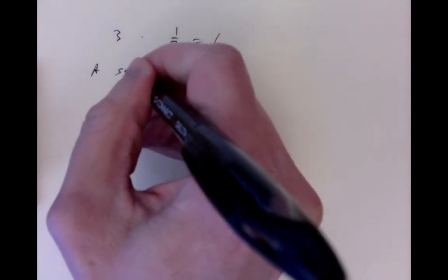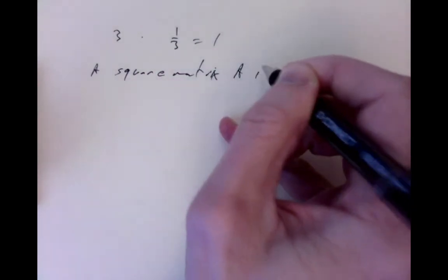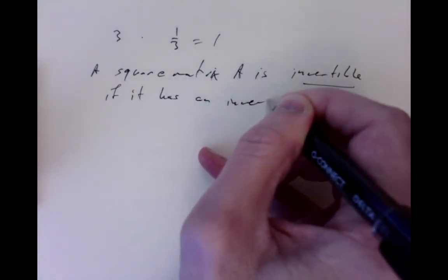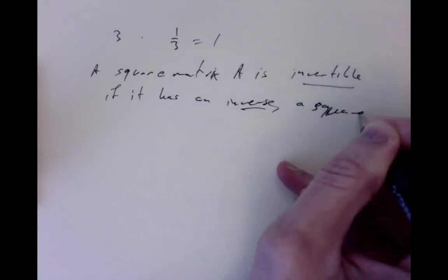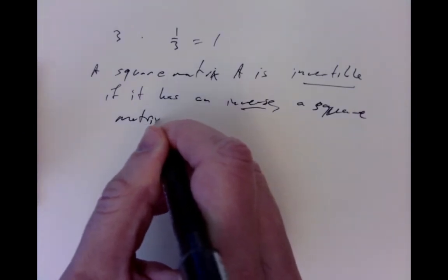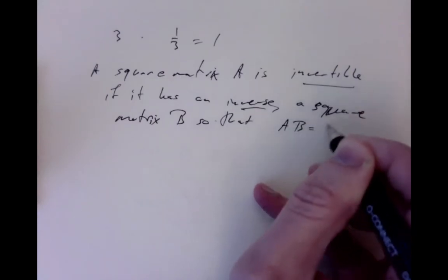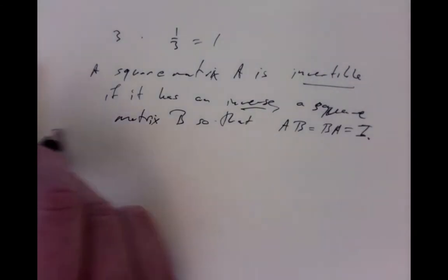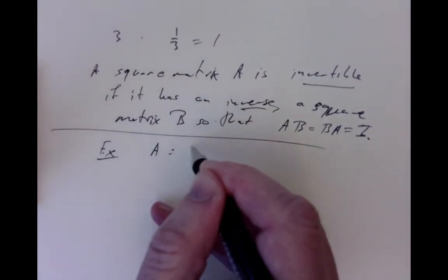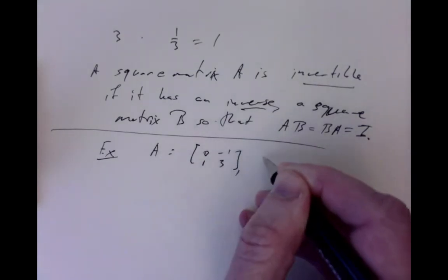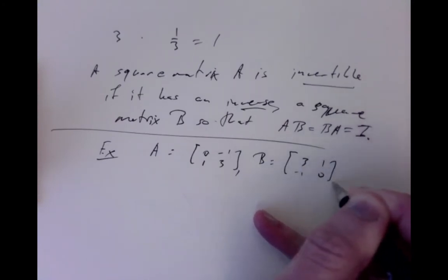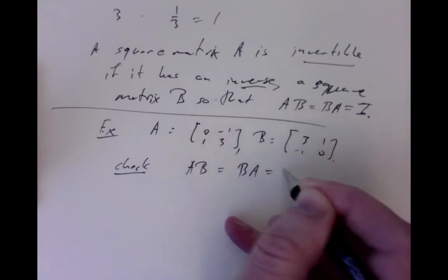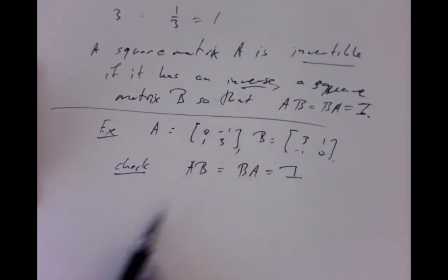A square matrix A is said to be invertible if it has an inverse — a square matrix B — so that A times B and B times A are both the appropriate-size identity matrix. As a simple example, if A is the matrix [0, -1; 1, 1; 3] and B is the matrix [3, 1; -1, 0], you can check by multiplying out that A times B equals B times A, and both equal the identity matrix. You have to try out both multiplications to check whether one is the inverse of the other.